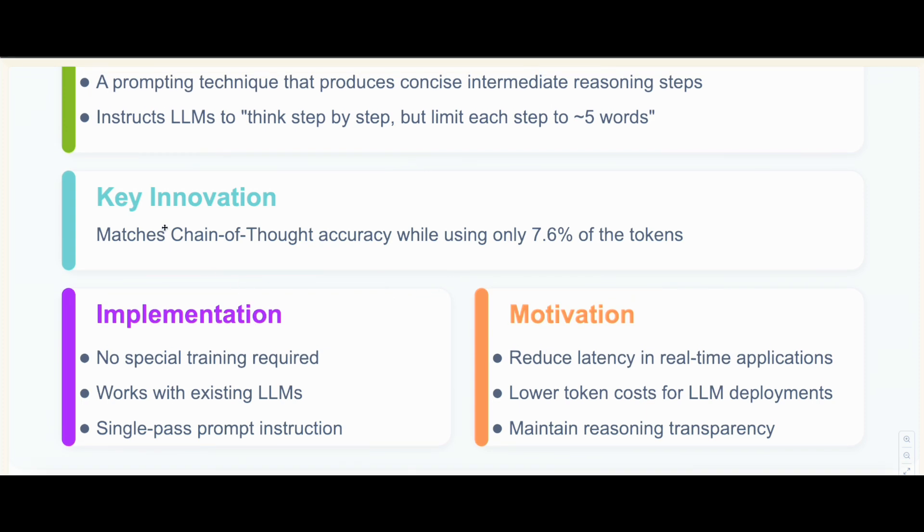They showed in their paper that they were able to get the same accuracy and even better than Chain of Thought with this new technique, but using just eight percent of the total tokens. So almost 80 to 90 percent decrease in token usage is huge. It saves a ton of potential cost and improves latency. The good news is it doesn't need any training or fine-tuning. Just having those instructions in the prompt, you're good to go.